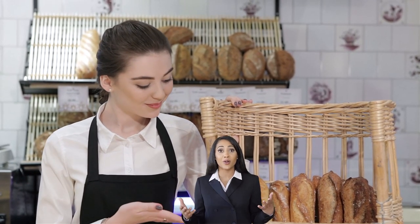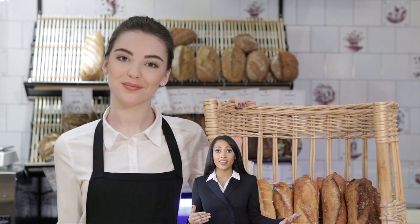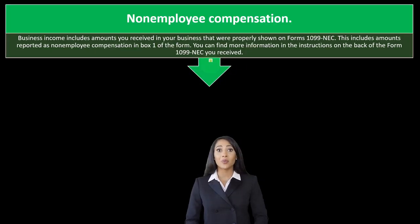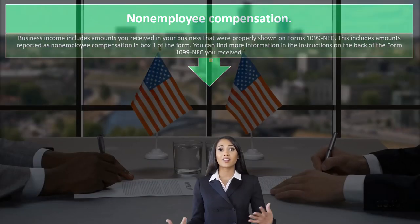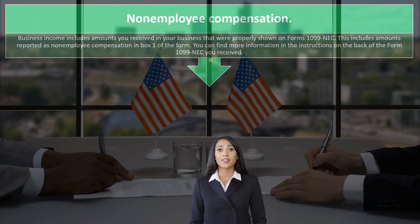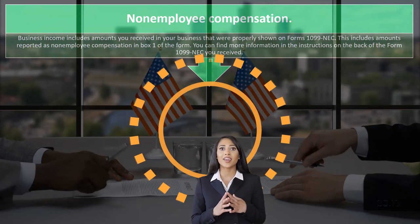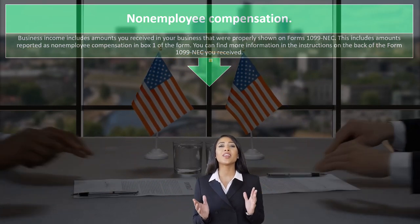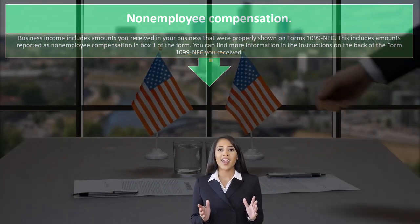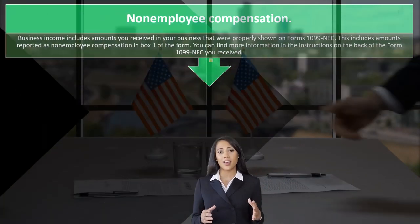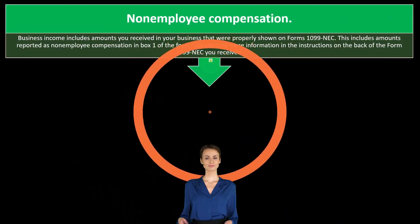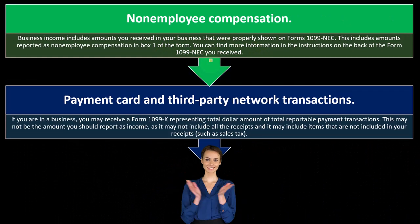That's often where small businesses run into a problem: if you don't file your taxes, the government only has the income side — the 1099-NEC — and will come after you saying you owe money based on top-line income, not net income, because you didn't file your tax return and therefore didn't provide the expenses.